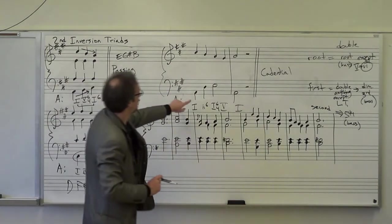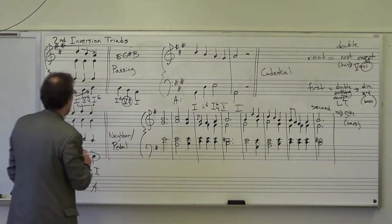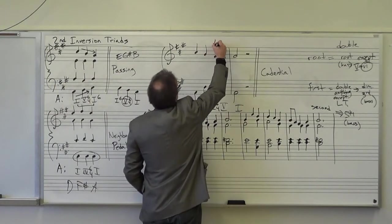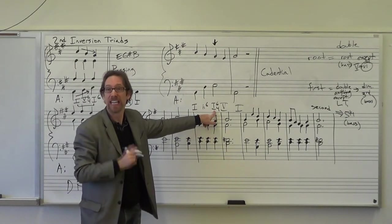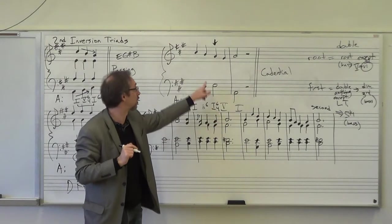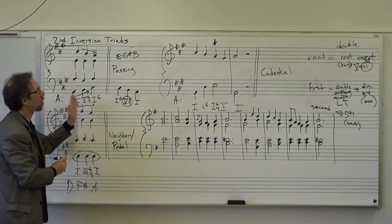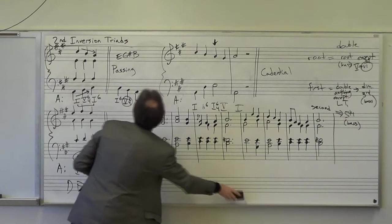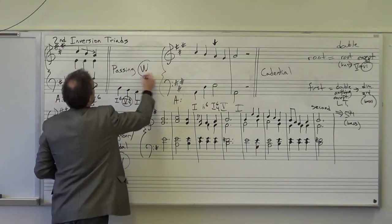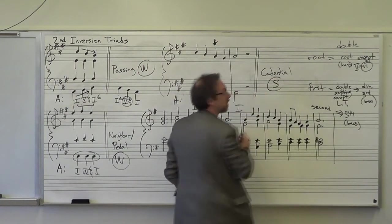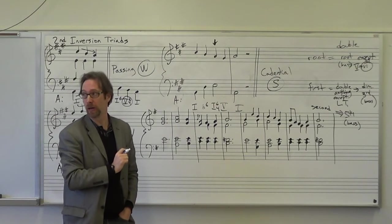You can see that right here. In this next example, the cadential 6-4, this one is a bit different in that this one needs to fall on a metrically strong beat. Let me say that again. The one 6-4 needs to fall on a metrically strong beat. So this would be beat three in this case. The others, your neighbor and your passing 6-4, almost always occur on a weak beat. Right? So, this is normally on a weak beat. This is normally on a weak beat. This is normally on a strong beat.